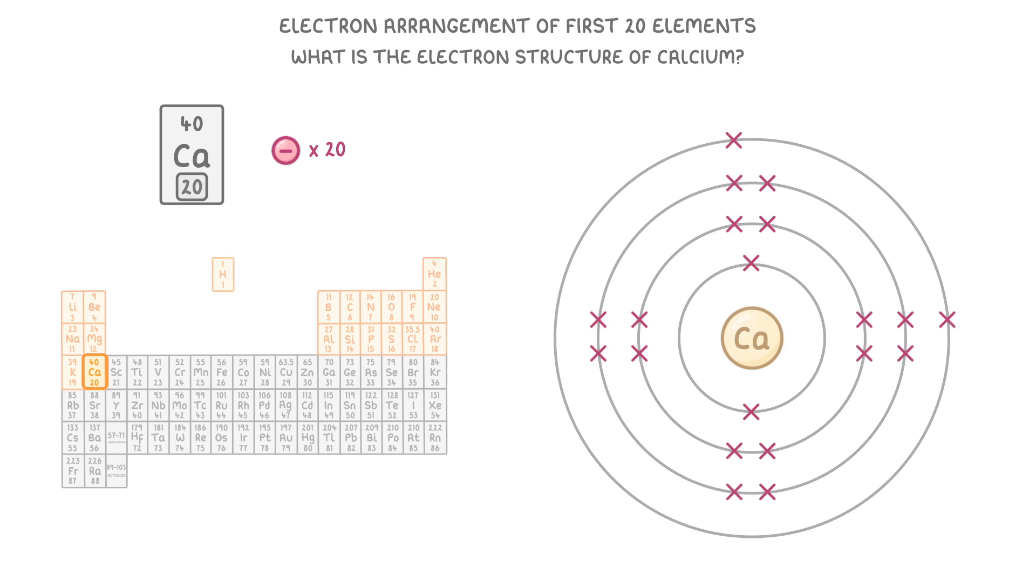And if we were to write this structure, it would just be 2, 8, 8, 2.